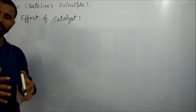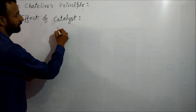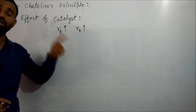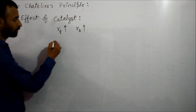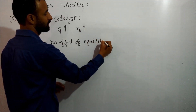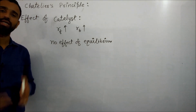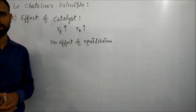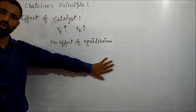Regarding the effect of catalyst: in a reversible reaction, a catalyst increases the rate of both forward and backward reactions equally. Therefore, it speeds up the attainment of equilibrium but cannot affect the concentration of reactant or product. So a catalyst has no effect on the equilibrium position — it only decreases the time taken to reach equilibrium, meaning the rate of attainment of equilibrium becomes faster.